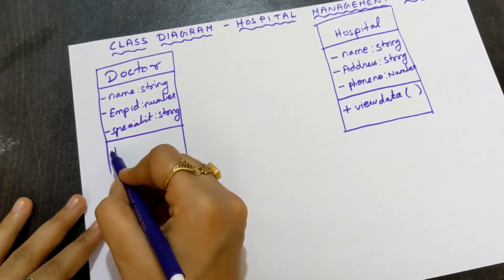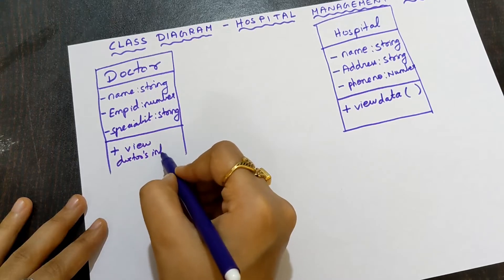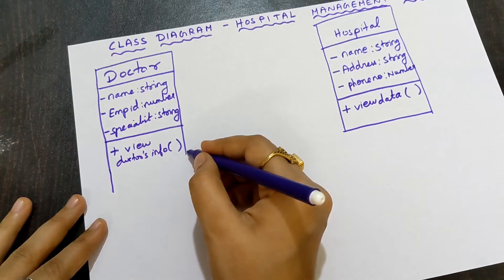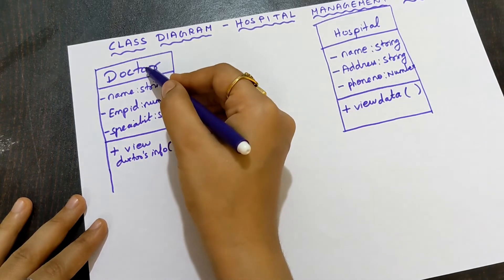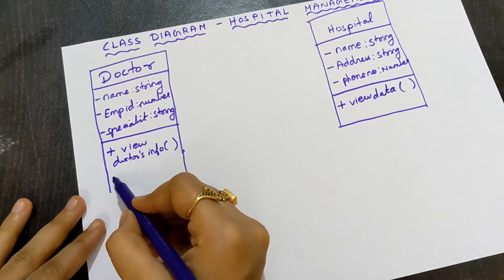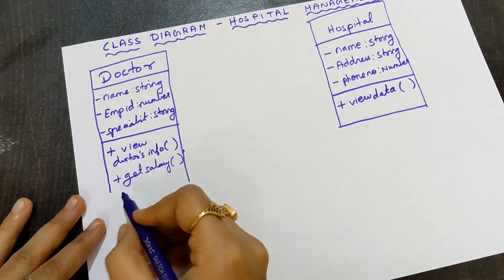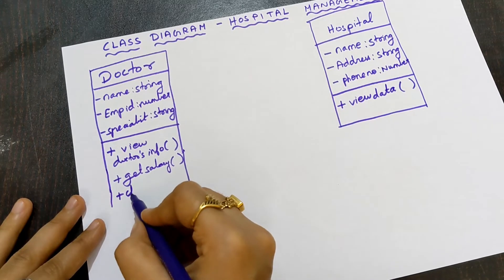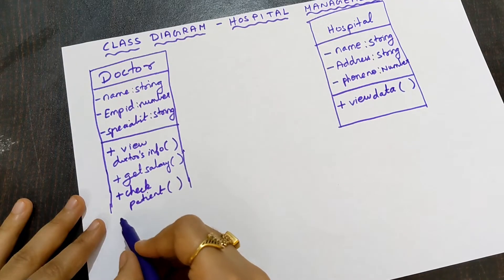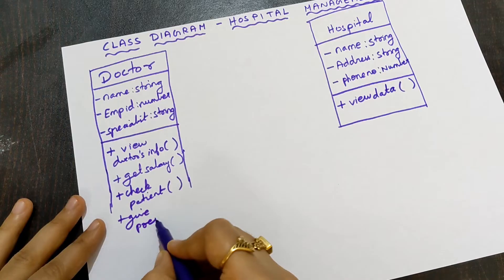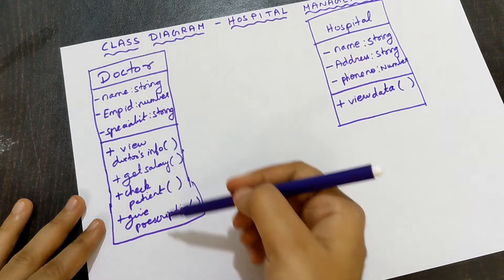The operations that a doctor can perform are: view doctor's info — the doctor can view and change their details; get salary — the doctor receives a salary at the end of every month; check patient — the role of the doctor is to check patients; and give prescription — after checking the patient, the doctor gives a prescription with the required medicines.